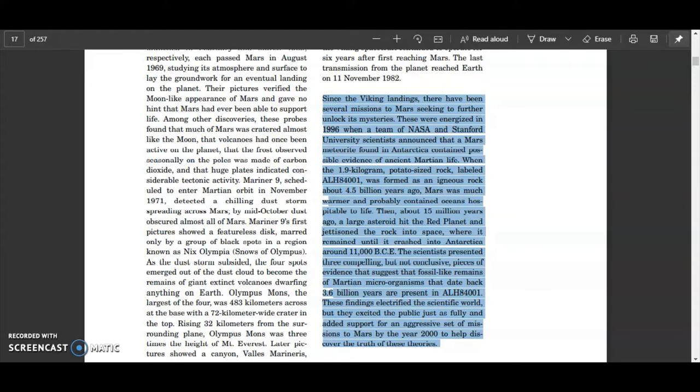When the 1.9 kilogram potato-sized rock labeled ALH 84001 was formed as an igneous rock about 4.5 billion years ago, Mars was much warmer and probably contained oceans hospitable to life. What a load of bollocks! And this is the rock in question.